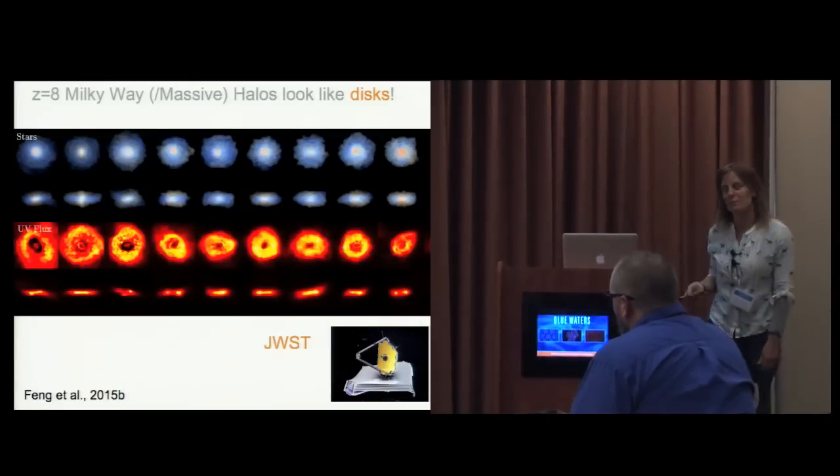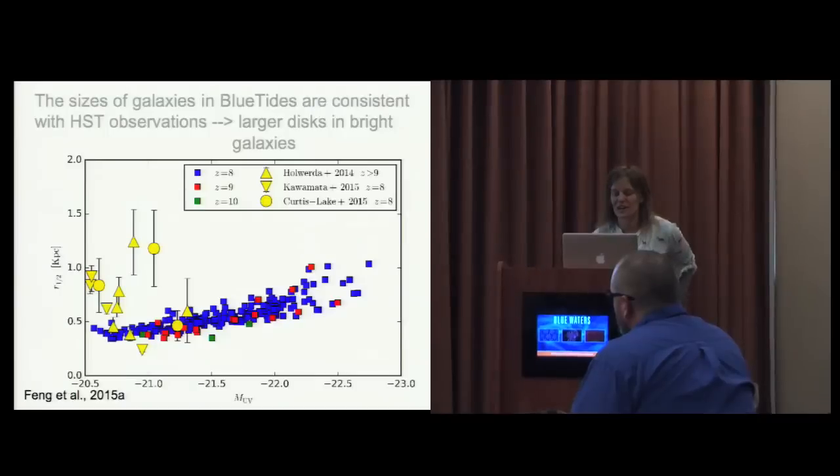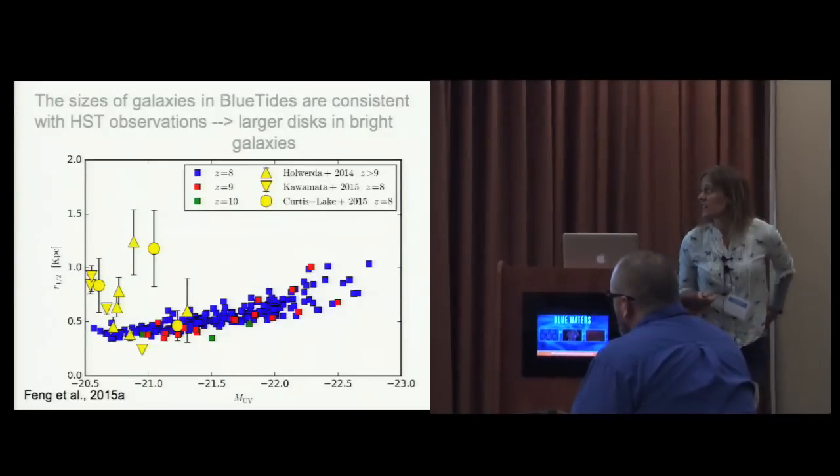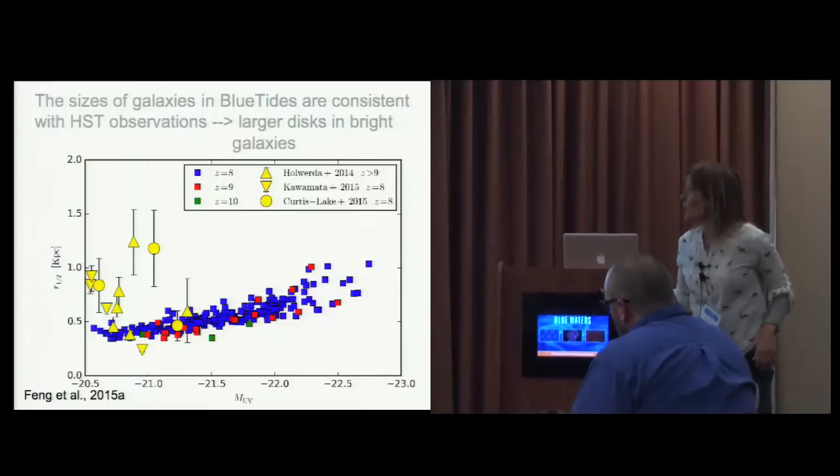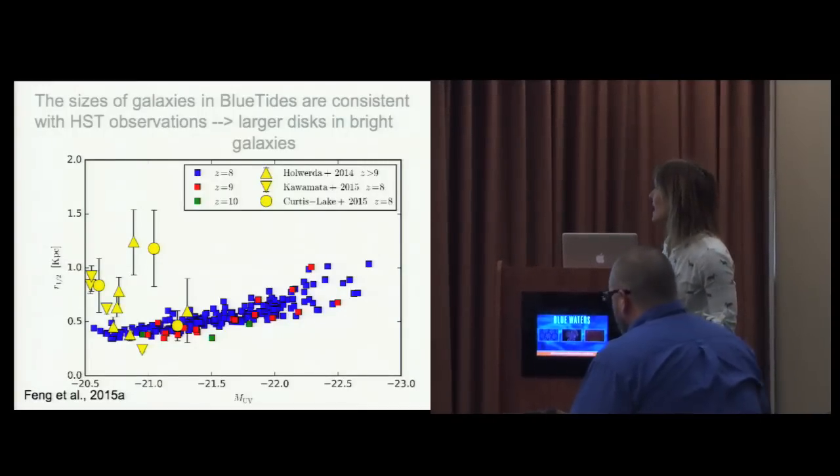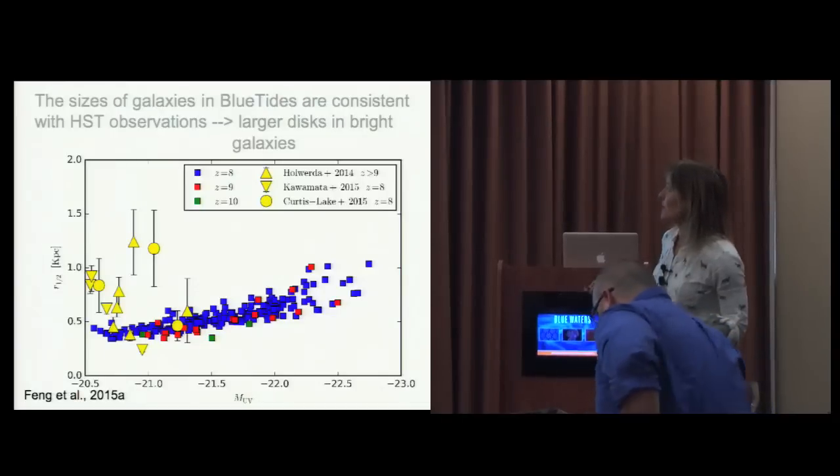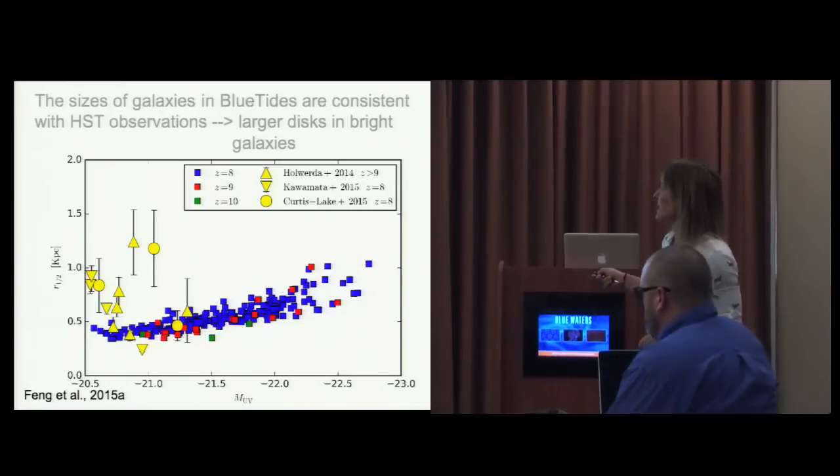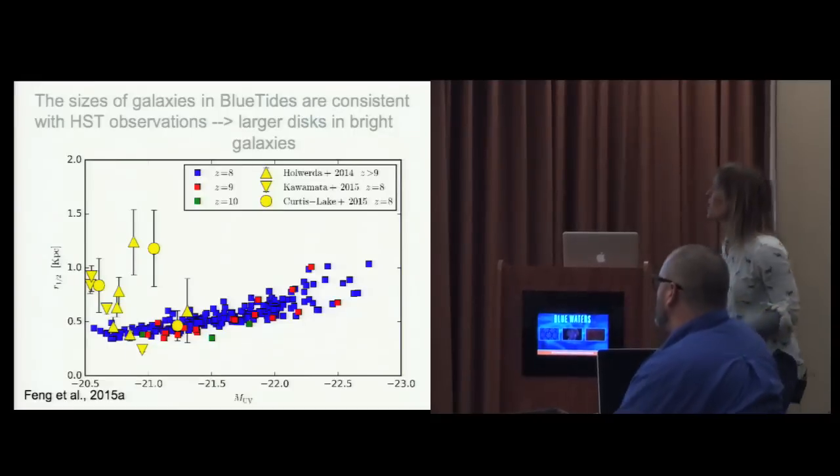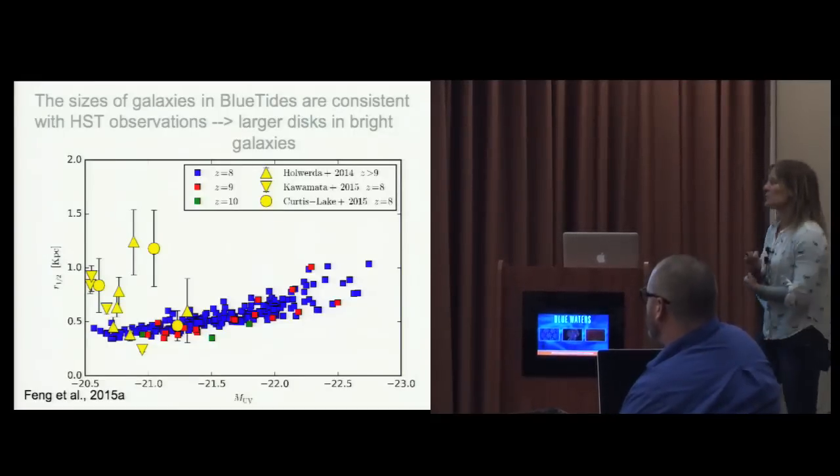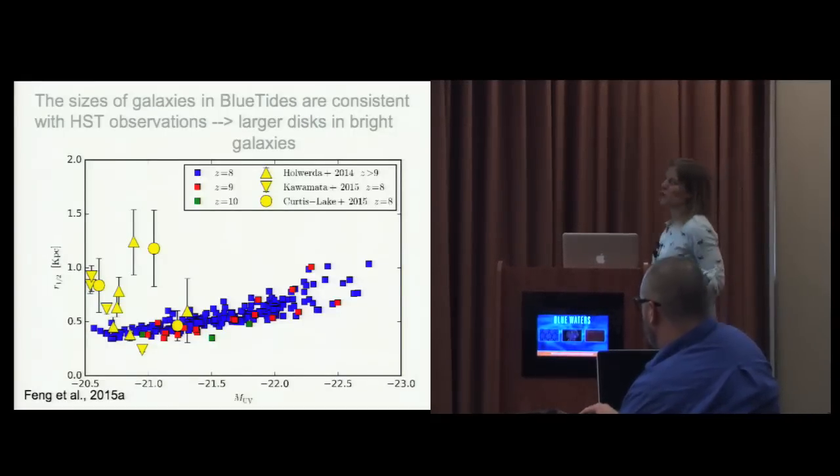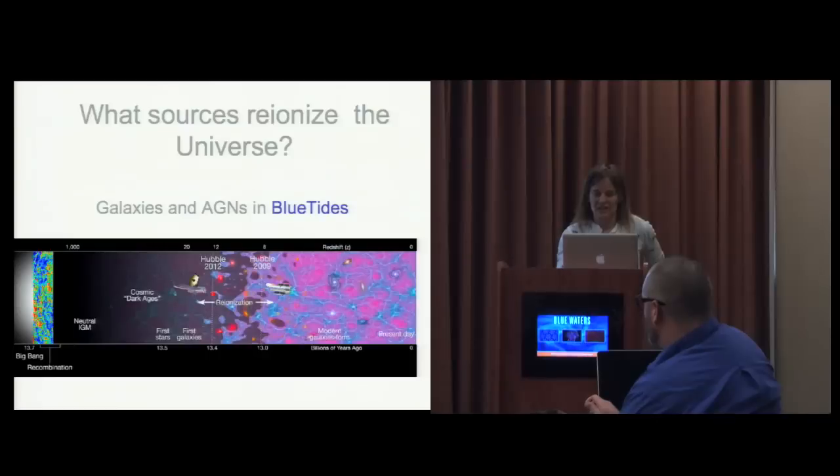We're hoping this guides observations for JWST and upcoming surveys of this kind. This is looking at what's currently being observed - this is the size of galaxies as a function of luminosity. This is the bright end of galaxies. Currently we're only seeing the very faint ones, and we're predicting that we should see these disky objects, massive objects, as we are able to finally probe larger volumes of the early universe and these first galaxies.